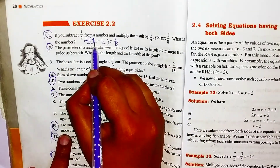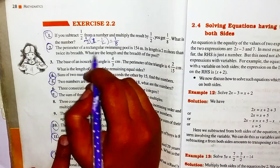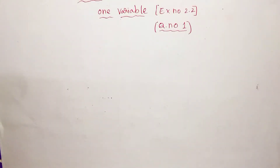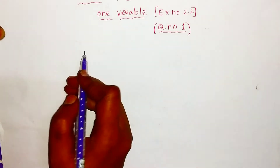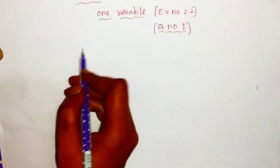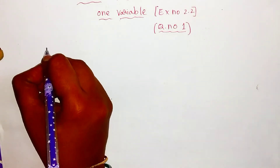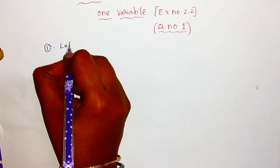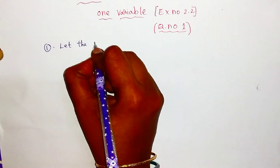Let x be the required number. According to the question, subtracting 1/2 from x and multiplying the result by 1/2 gives 1/8. So the equation is: (x − 1/2) × 1/2 = 1/8.